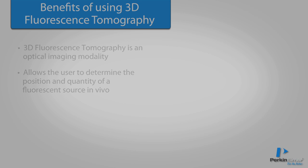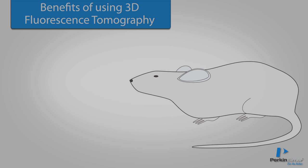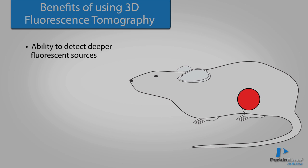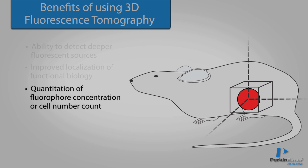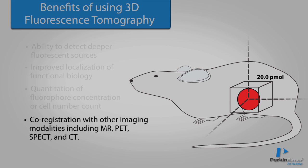The benefits of 3D fluorescence tomography over traditional 2D planar fluorescence include the ability to detect deeper fluorescence sources, improved localization of functional biology, quantitation of fluorophore concentration or cell number count, and co-registration with other imaging modalities such as MR, PET, SPECT, and CT.